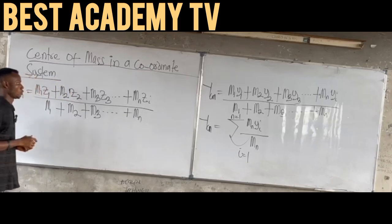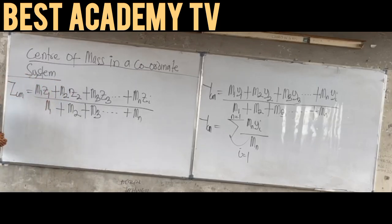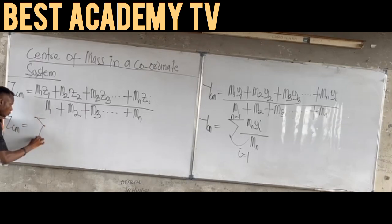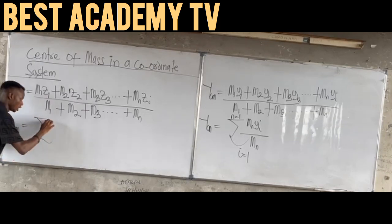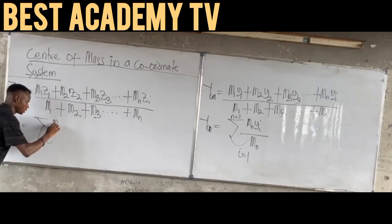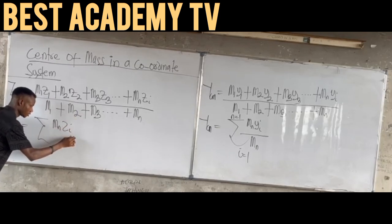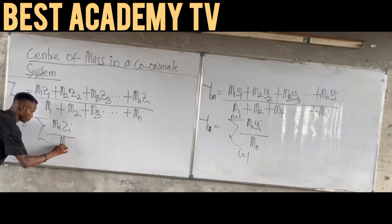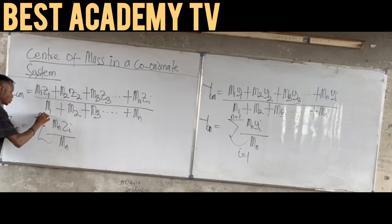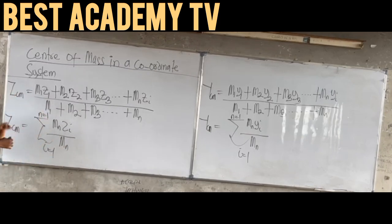Representing Z center of mass in terms of summation: Z_cm equals the sum of (M_i · Z_i) divided by the sum of M_i, where i equals 1 to n. Please take note.